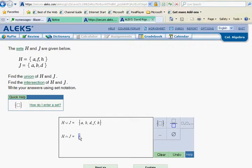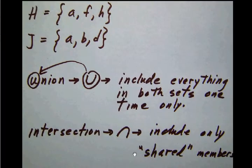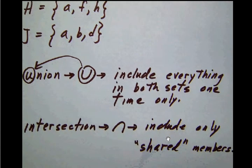Okay. Down below here now we have an intersection. So this little upside down horseshoe means intersection. Once again, a quick look at our notes here. The intersection symbol, the upside down horseshoe here, that includes only shared members. So we're only going to look at the items that are shared by both sets.